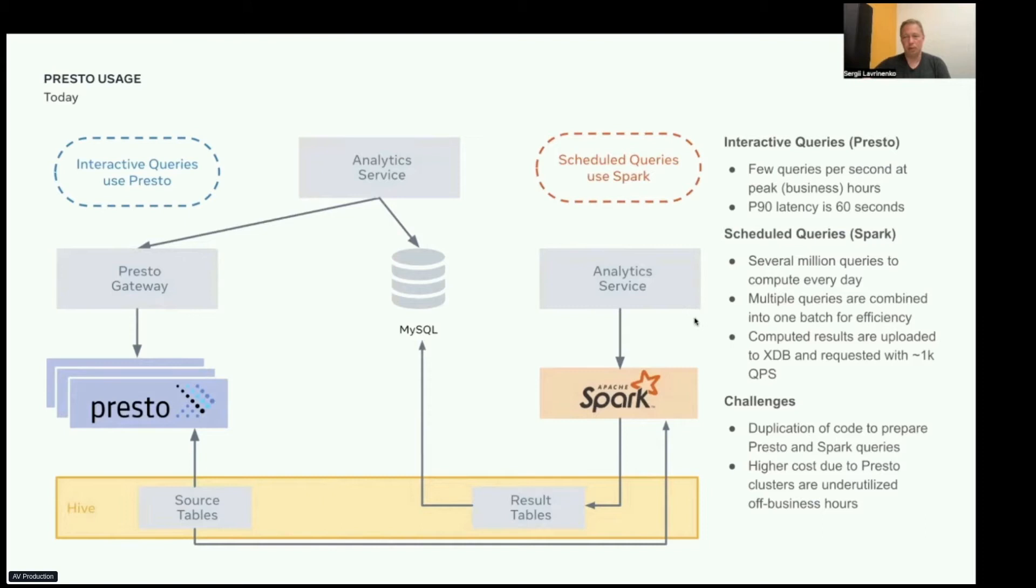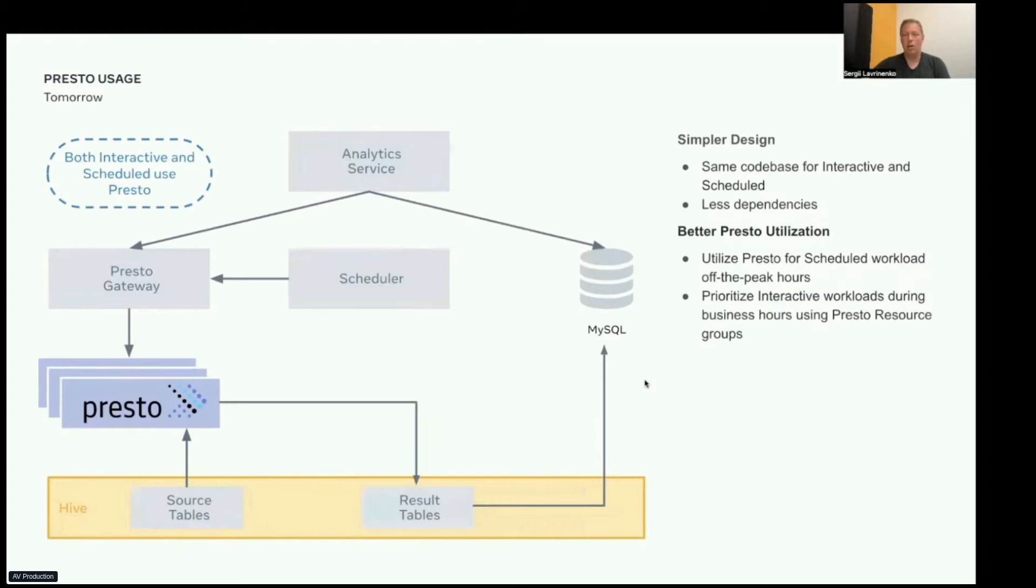Well, in the current system, we should maintain both Presto and Spark pipelines separately. This leads to duplication of code. This is also not very efficient because ad hoc queries are usually executed during business hours. And as a result, Presto clusters are mostly idle overnight. To solve these problems, we examined the possibility of moving all scheduled workloads from Spark to Presto. We ran a set of experiments, and we obtained benchmarks for the set of analytics service specific queries. We saw order of magnitude resource usage reduction on Presto compared to Spark.